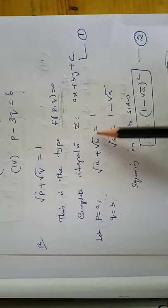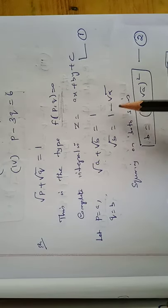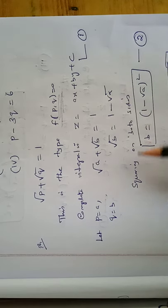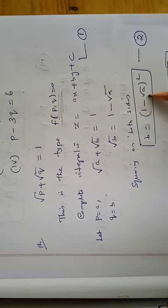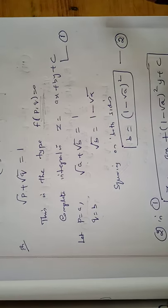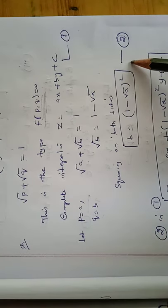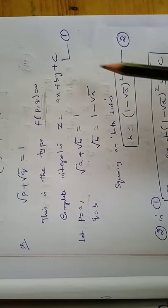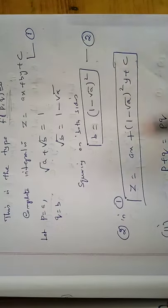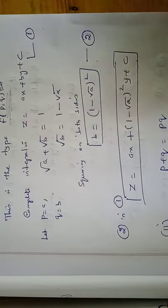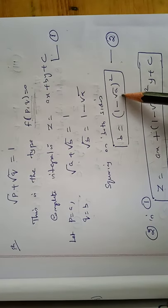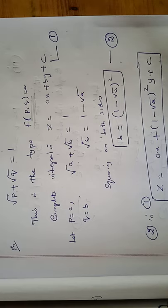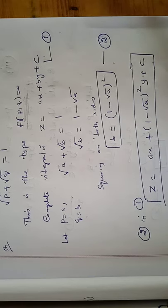The given problem becomes root a plus root b equal to 1, so root b equal to 1 minus root a. Squaring both sides, b equal to (1 minus root a) squared. This is equation number 2. Substituting into equation 1, the complete integral is z equal to ax plus (1 minus root a) squared times y plus c.